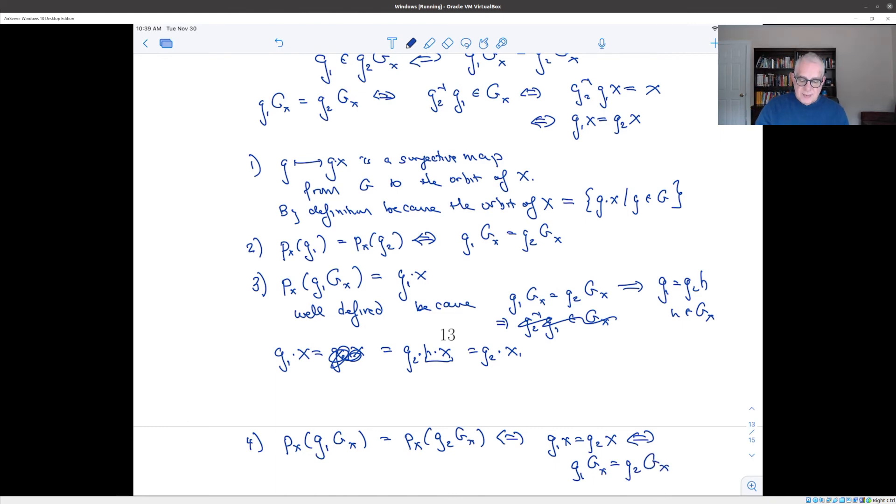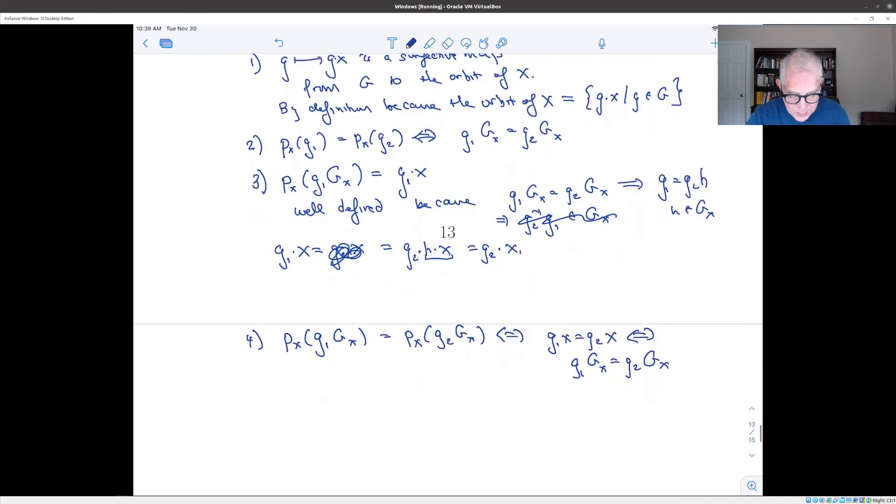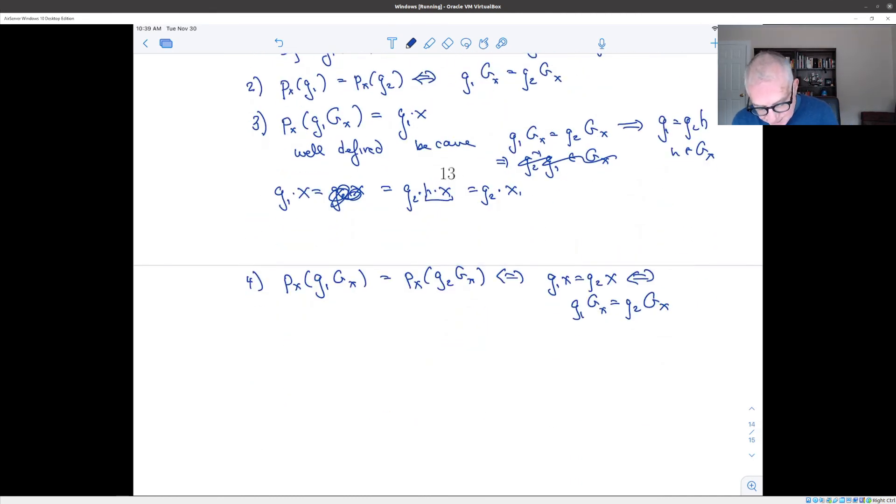So this may seem very formal, but if you want kind of a picture here, if we think about our orbit, here's x. Here's our orbit. So here's x, G1·x, G2·x, G3·x, and so on. And here's G. G is divided up into cosets. This is the stabilizer of x. This is G1 times the stabilizer of x. This is G2 times the stabilizer of x.